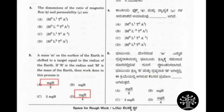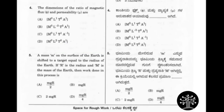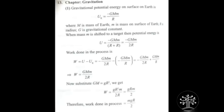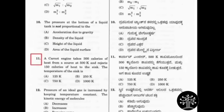For the fifth question, it's a fraction — you're going to split the numerator. It's MGR by 2A. You have a numerator and denominator to consider, and taking the help of other options, option C supports option A. Therefore option A is the correct answer: MGR by 2. This is from the chapter Gravitation.